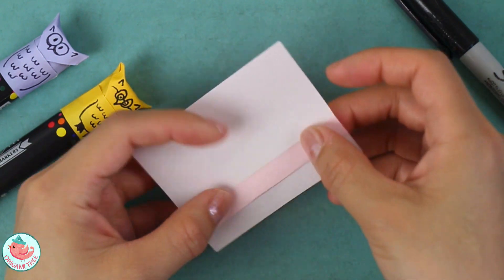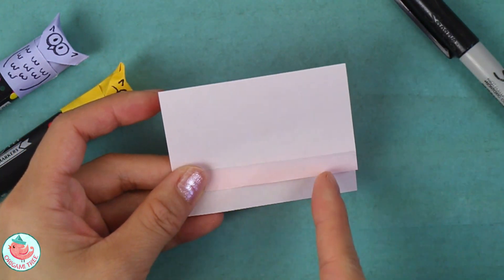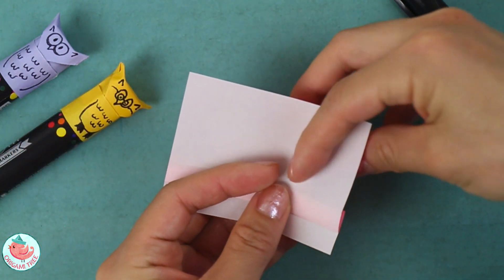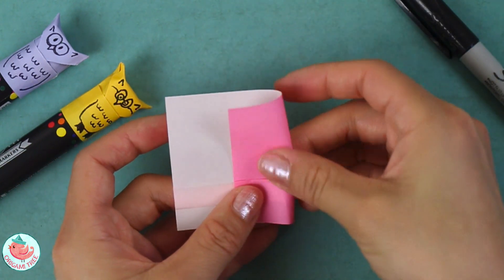After that you want to flip the entire thing around and sort of divide it into thirds. So fold the right side in about a third of the way and crease that in.